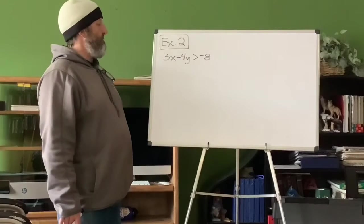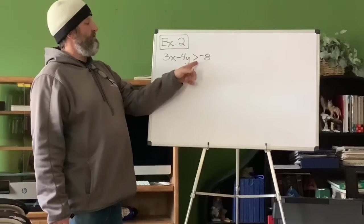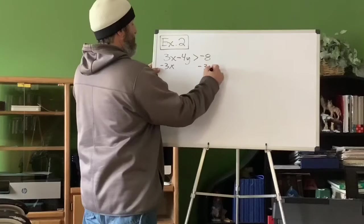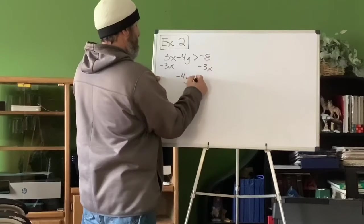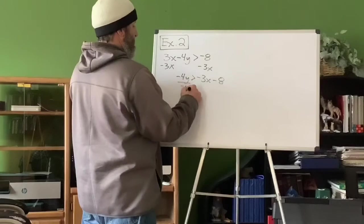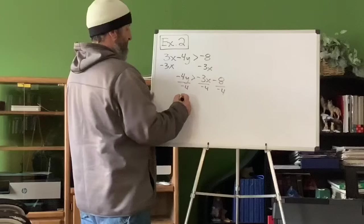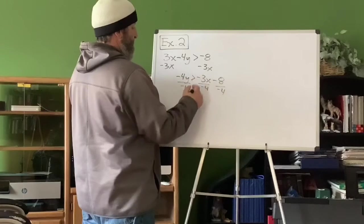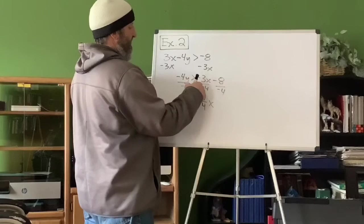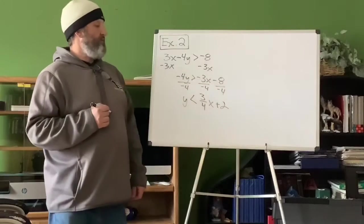Example two — we're going to go a little bit faster. This one's a bit different: the inequality only has a greater than sign, no equal to. Subtract 3x from each side: negative 4y is greater than negative 3x minus 8. Divide by negative 4 — and again, dividing by a negative means we flip the inequality. So y is less than three-fourths x plus 2.